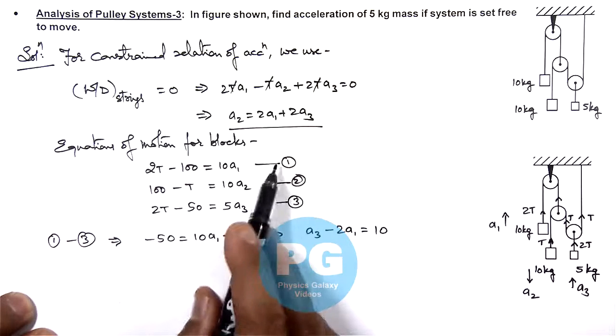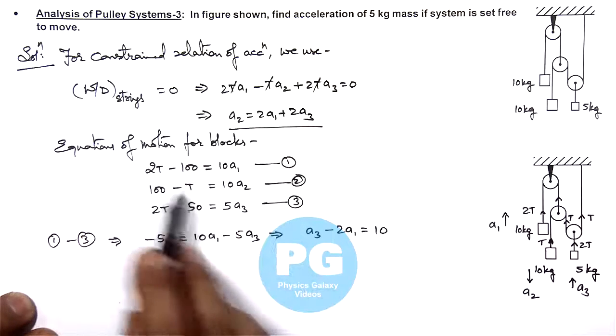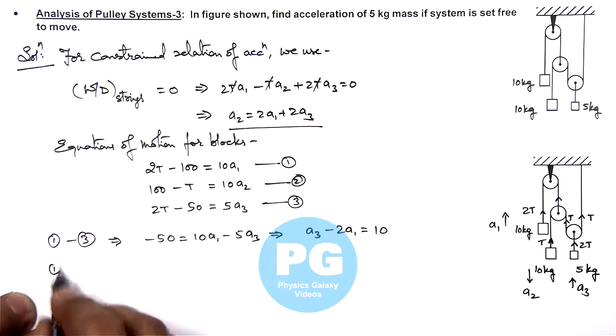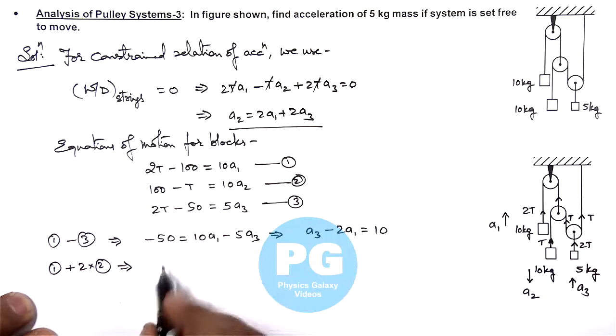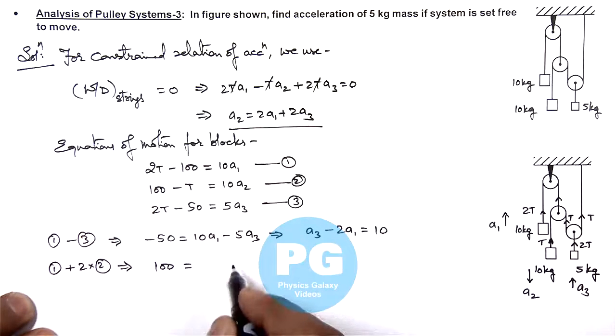And from 1 and 2, if we wish to eliminate t, we can do like this: 1 plus twice of equation 2. And this resulting us on the left hand side, 1 plus twice of 2 will be hundred, t gets cancelled out and on the right hand side.